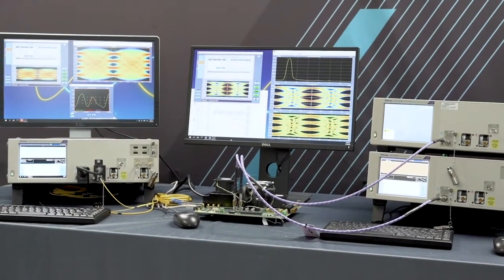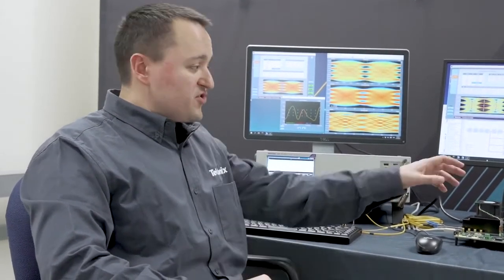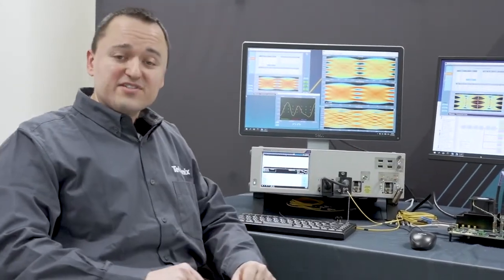At the heart of the system is the DPO70000SX series performance real-time oscilloscope, available in bandwidths up to 70 gigahertz and sampling rates up to 200 giga samples per second. The DPO70000SX series serves as a common platform for both electrical and optical PAM4 solutions.